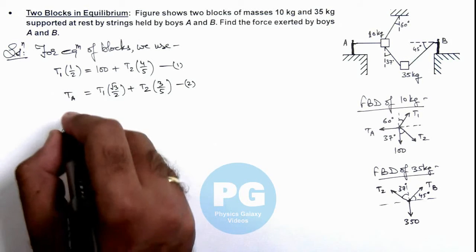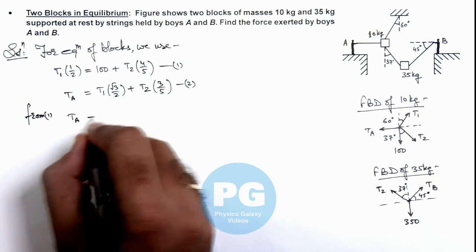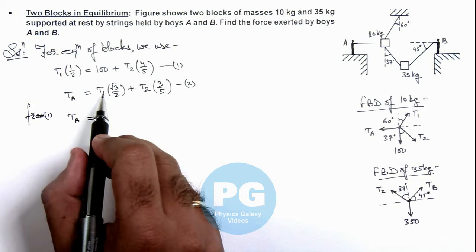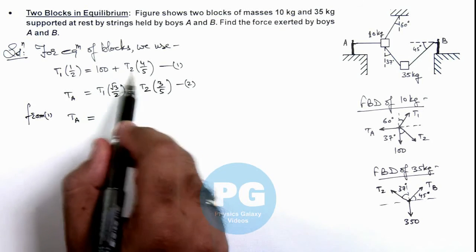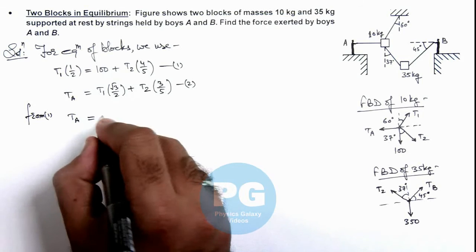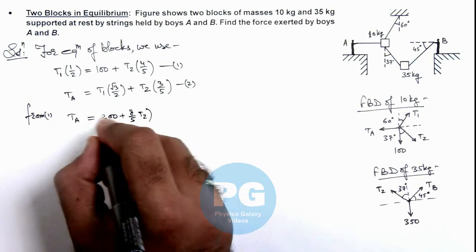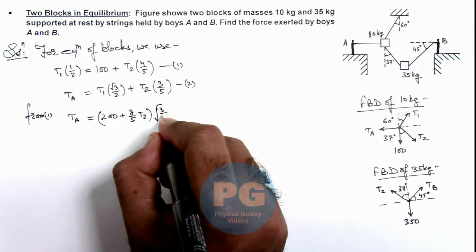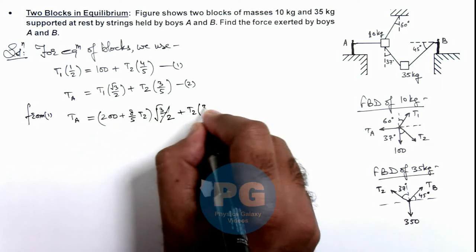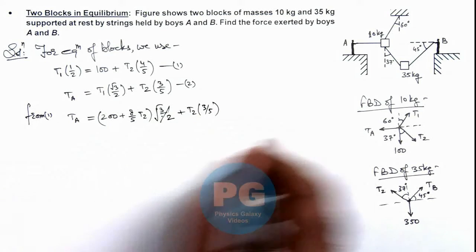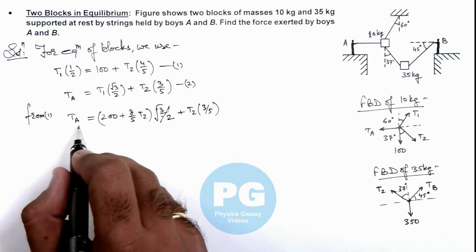We can simplify this again. From equation 1, substituting the value of T1, we get T_A equals 200 plus (8/5)T2. So we can write this as 200 + (8/5)T2. Once we get the value of T2, we can directly get the value of the force exerted by boy A.